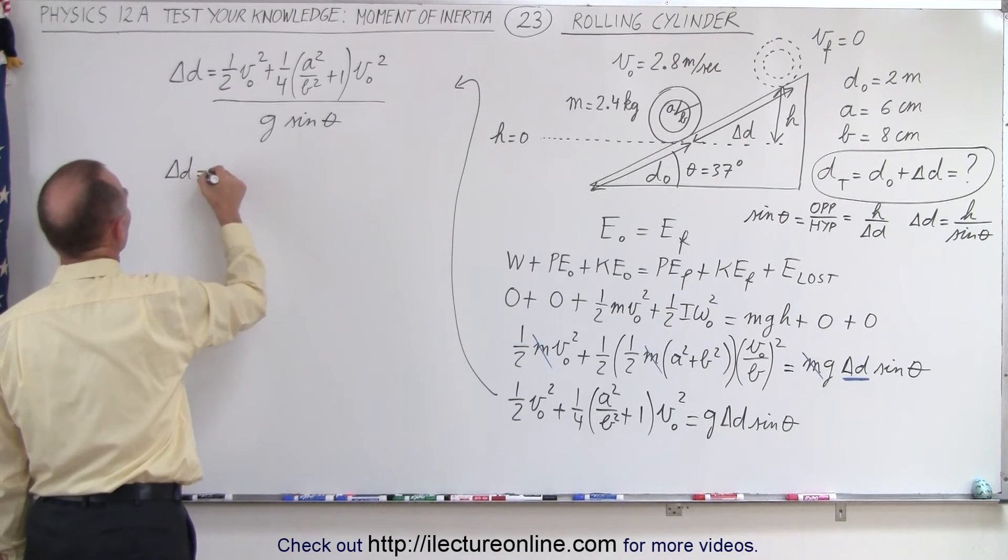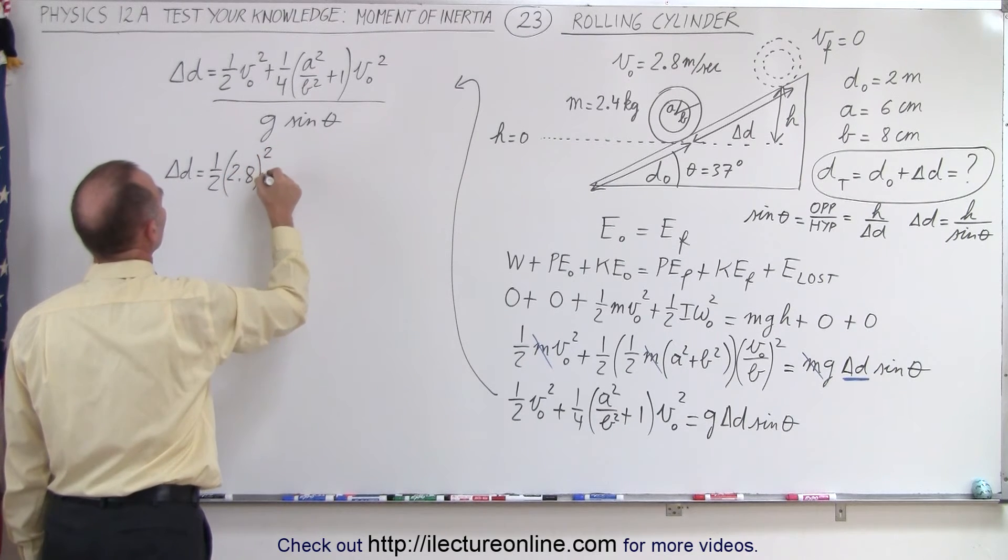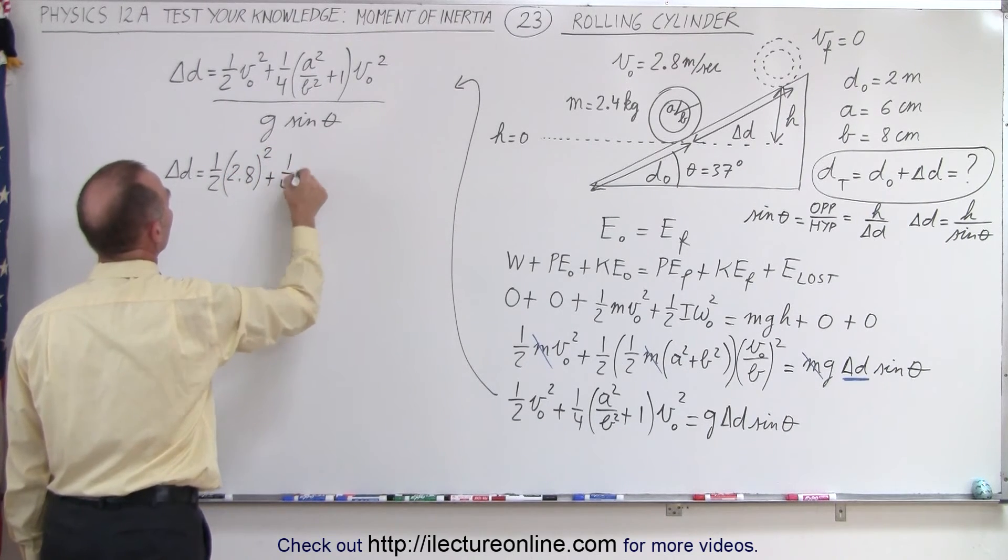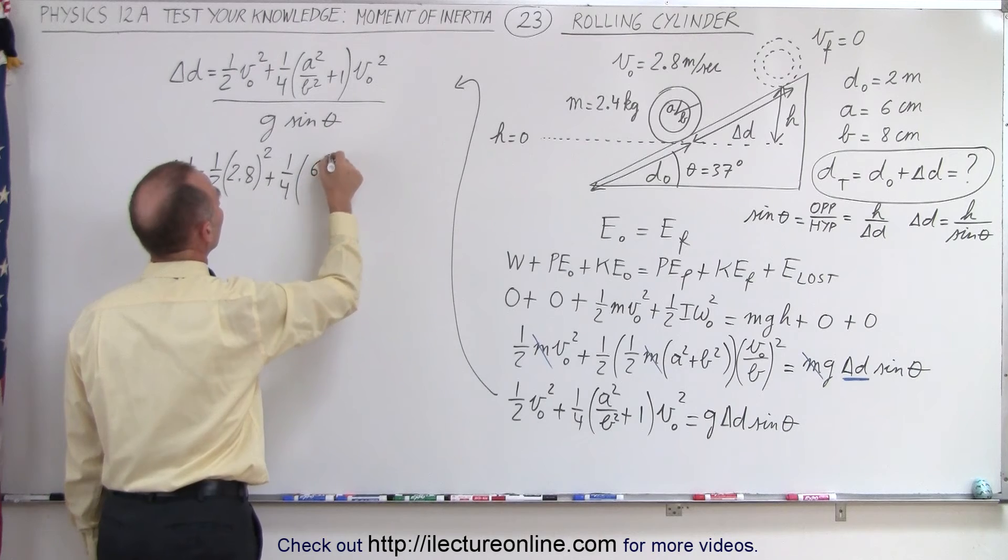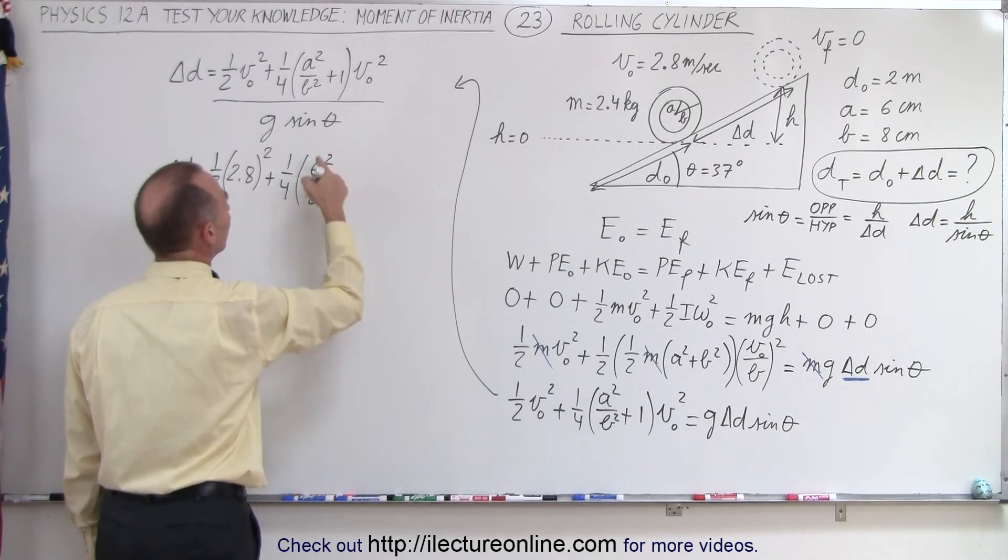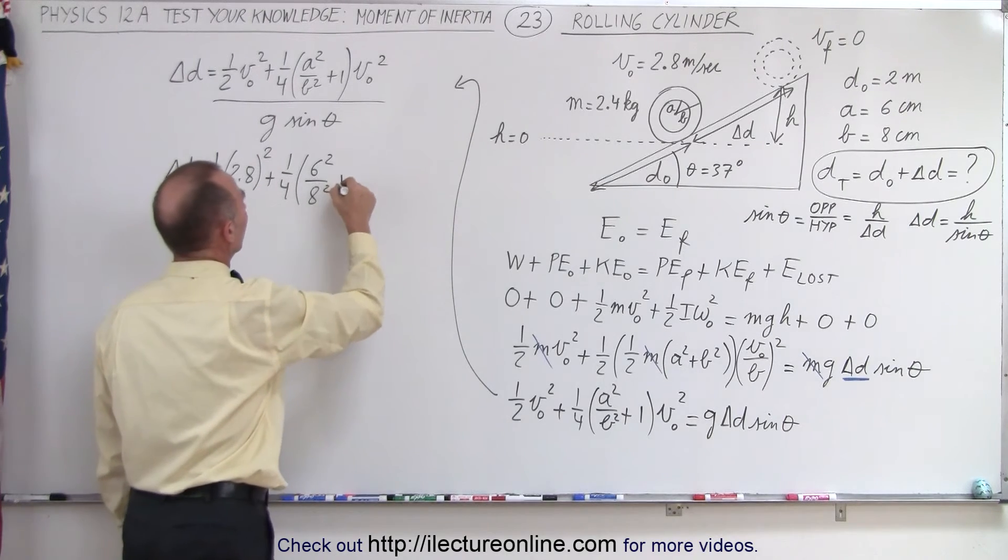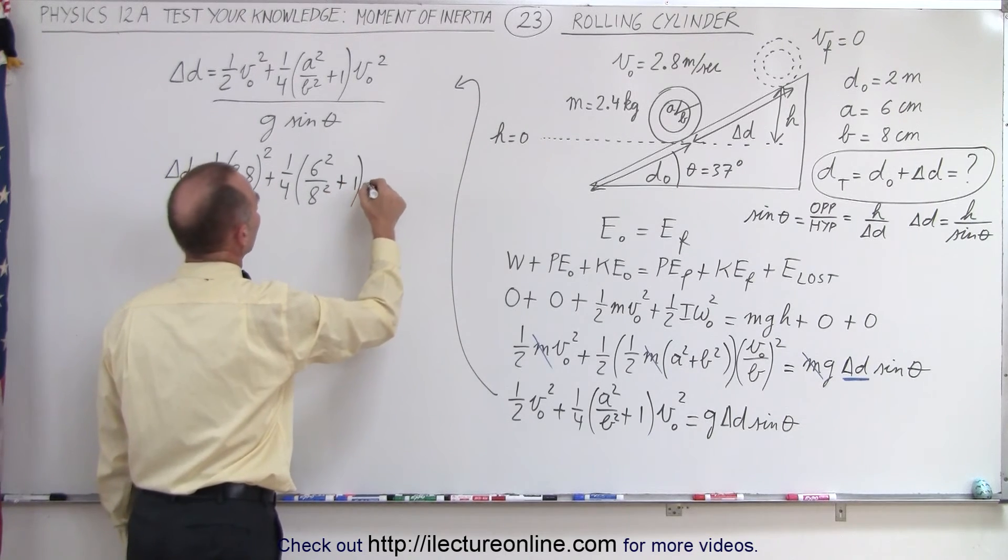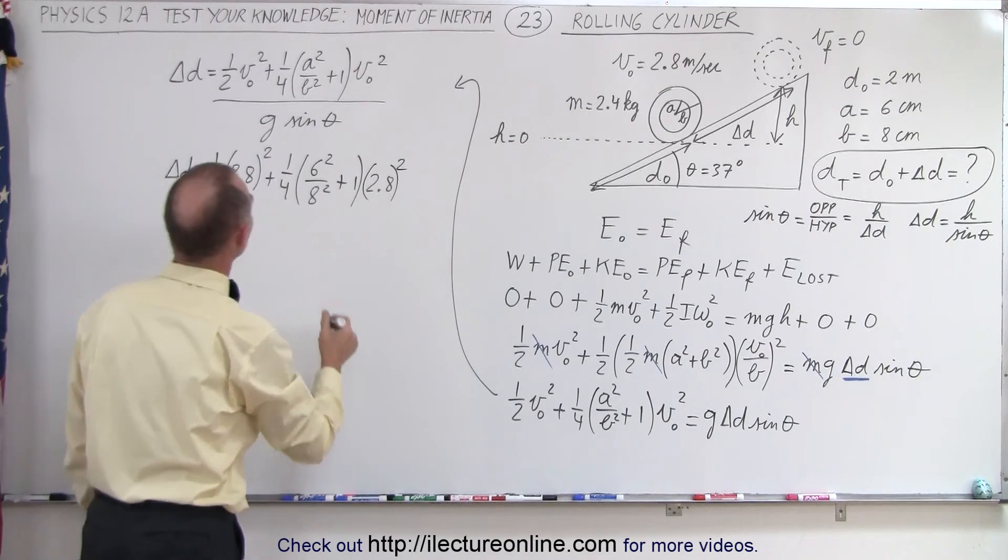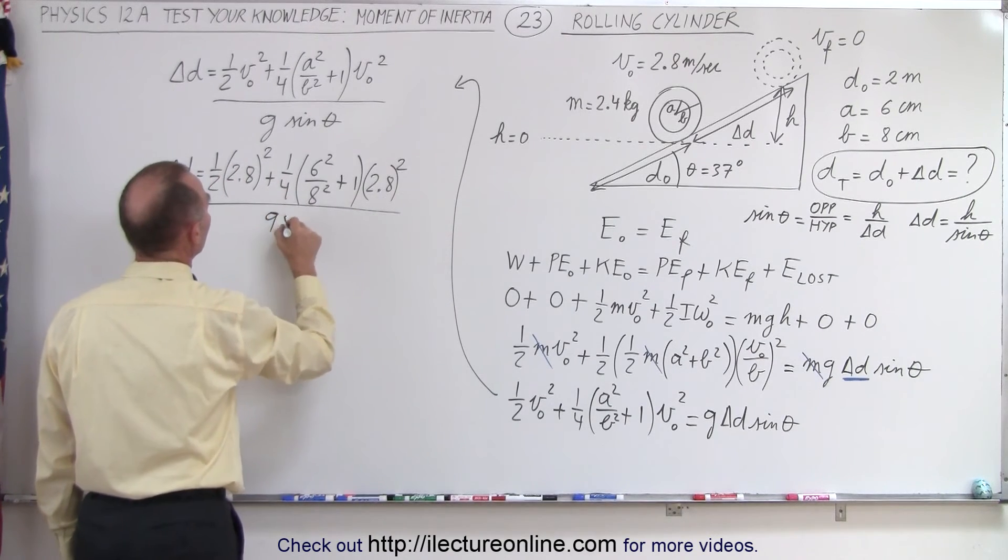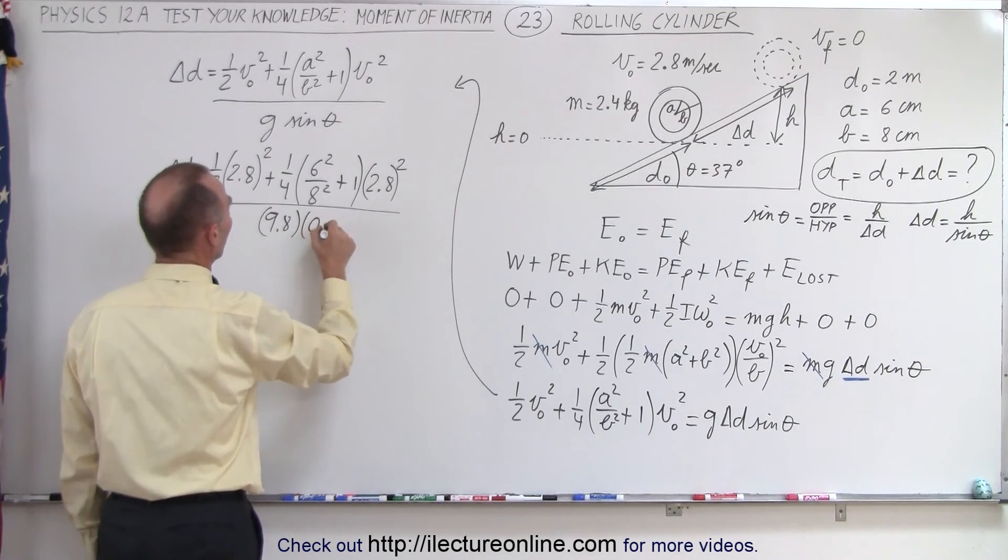So delta d is going to be equal to one-half times v-initial-squared, which is 2.8 squared plus one-quarter times the ratio of a-square over b-square. Now a is six centimeters, that would be six-square divided by eight-squared. Notice we don't have to convert centimeters to meters because it's a ratio, plus one times v-initial-squared, that would be 2.8 squared. And then the whole thing divided by g, which is 9.8. And we multiply times the sine of 37 degrees, which is about 0.6.